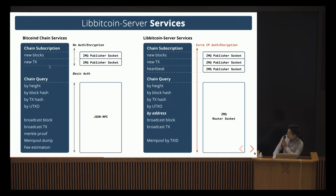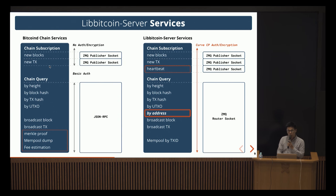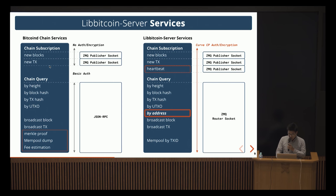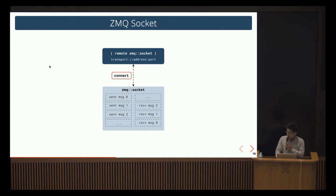In terms of the chain query, one thing to point out is that Libbitcoin indexes also by address. So you can subscribe to notifications regarding an address — whether something is being spent to it, or whether a UTXO of an address is being spent.